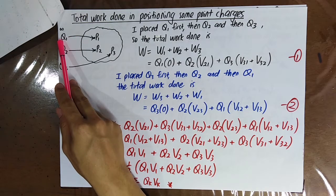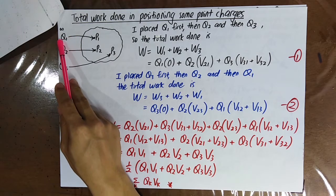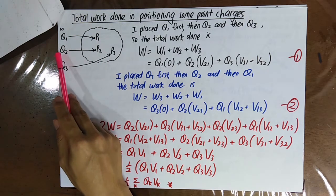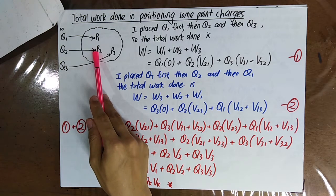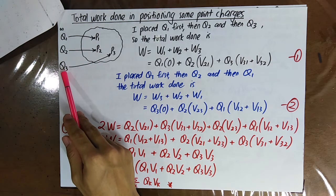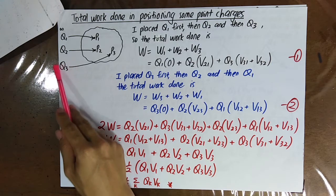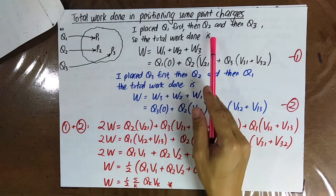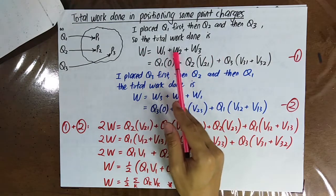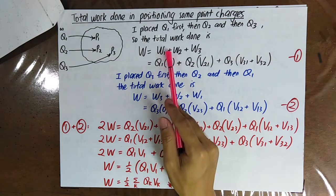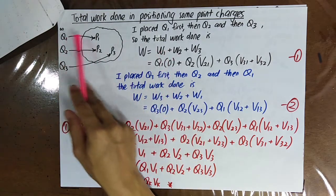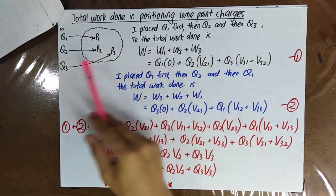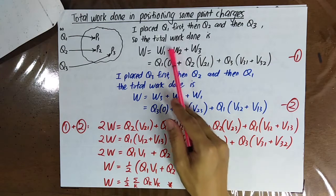Let's say you place q1 from infinity to point one first, then you place point charge q2 from infinity to point two, and then you place the third charge from infinity to p3. Your total work done is w1 plus w2 plus w3, where w1 is the work done to bring the first charge, w2 is the work done to bring the second charge, and w3 is the work done to bring the third charge.